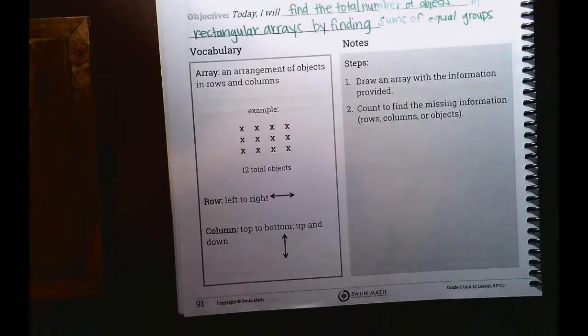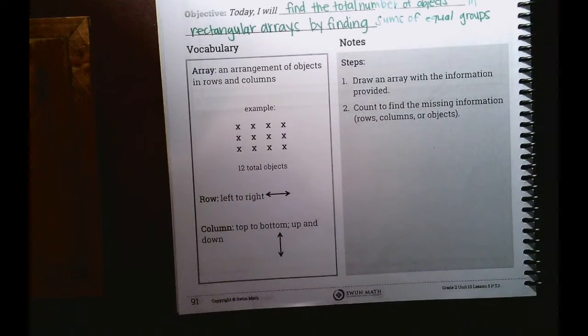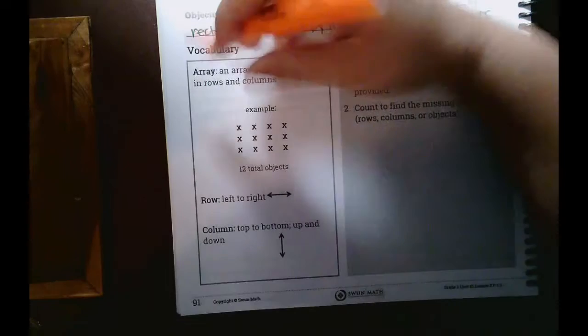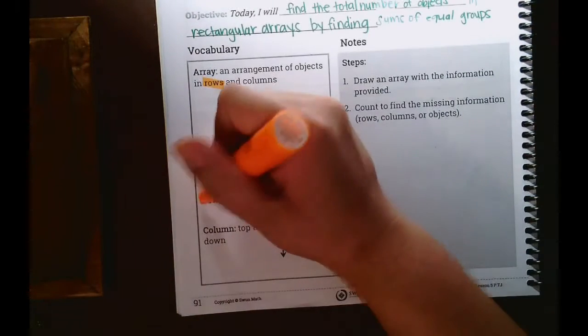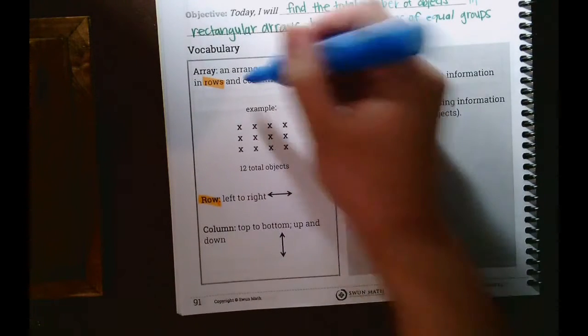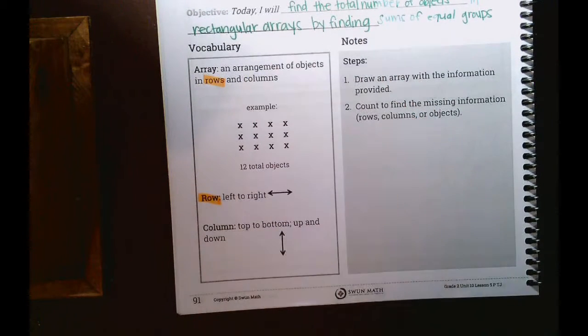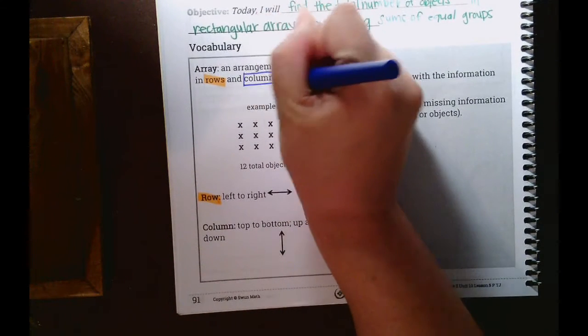So remember arrays are an arrangement of objects in rows and columns. So rows, I'm going to highlight in orange, and down here too, row, and I'm going to highlight columns in blue. Actually, I'm going to outline columns in blue.